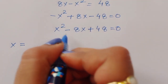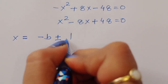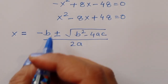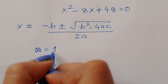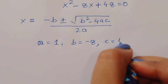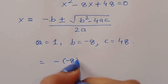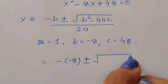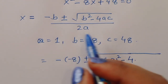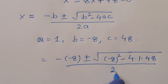Now we use the quadratic formula to find x. The formula is x equals minus b plus or minus square root of (b squared minus 4ac) all divided by 2a. Here a equals 1, b equals minus 8, and c equals 48. Substituting: x equals minus(minus 8) plus or minus square root of ((minus 8) squared minus 4 times 1 times 48) divided by 2 times 1.